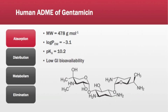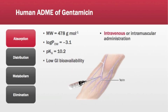With a molecular weight of 478 grams per mole, gentamicin is not too large to undergo simple transcellular diffusion. But with a log POW of negative 3.1, we can see that it might be too hydrophilic to cross plasma membranes unassisted. Gentamicin has exceptionally poor absorption across the lining of the gastrointestinal tract, so oral administration is not used. Instead, intravenous or intramuscular administration is used.